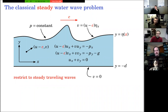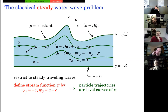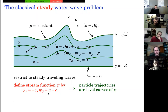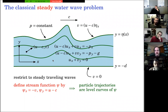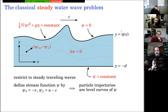Because this is a series on steady traveling waves, we boost to a moving frame moving to the right with constant speed c, and assume all time dependence drops out. Now we introduce the stream function psi. Since the velocity field is incompressible, rotating it 90 degrees gives something curl-free, which has a potential. There's a function psi whose gradient gives the velocity components, and fluid particle trajectories are confined to level curves of psi.